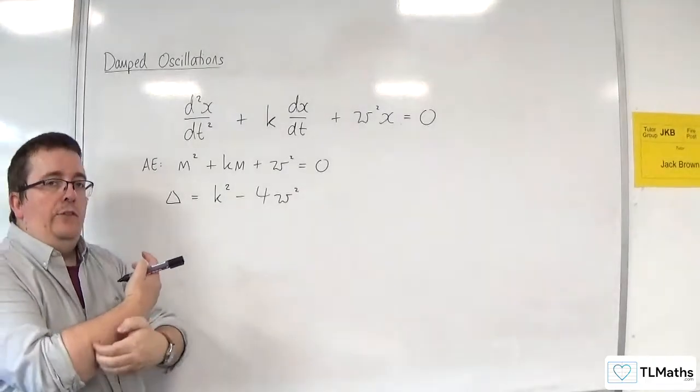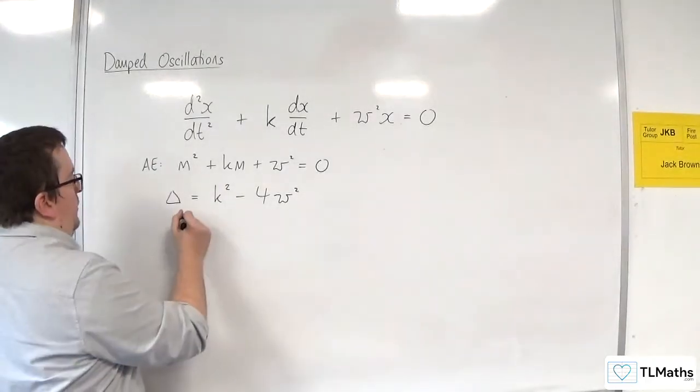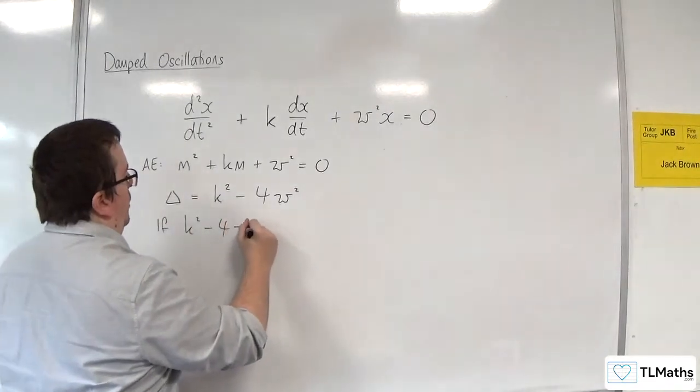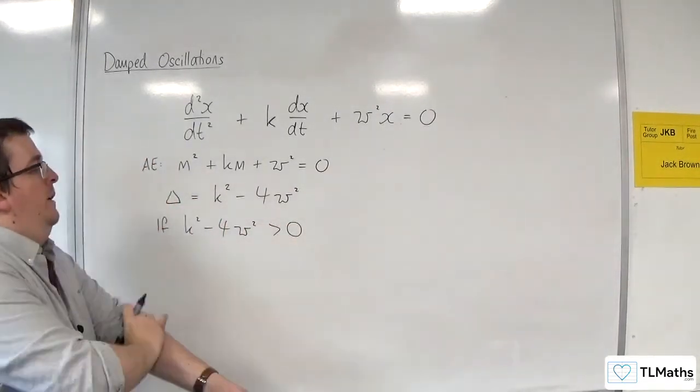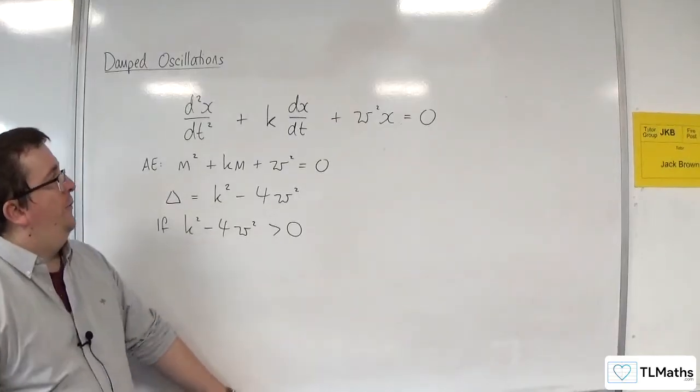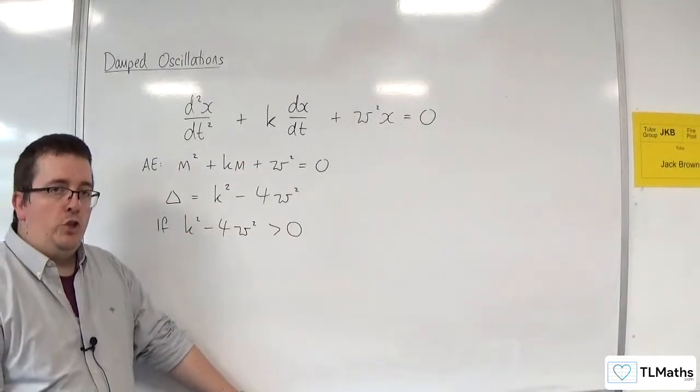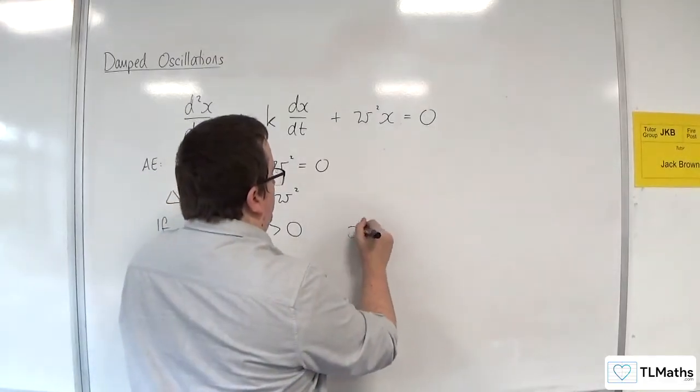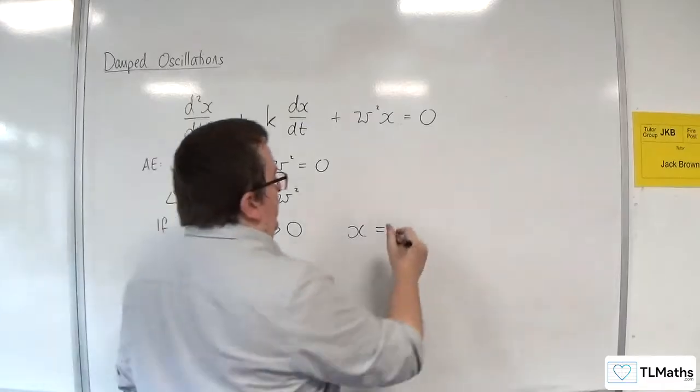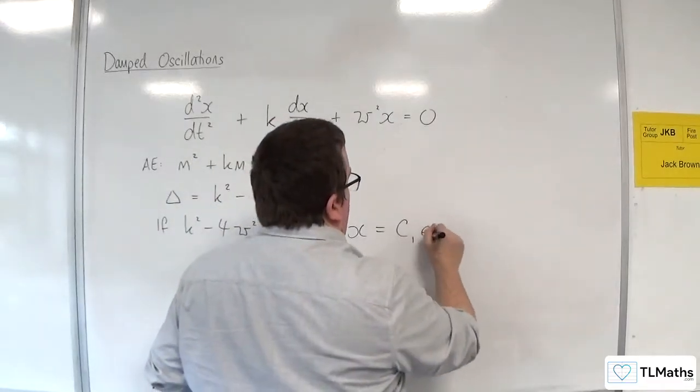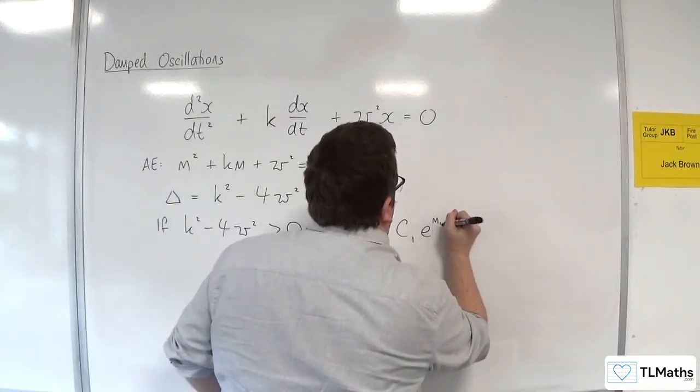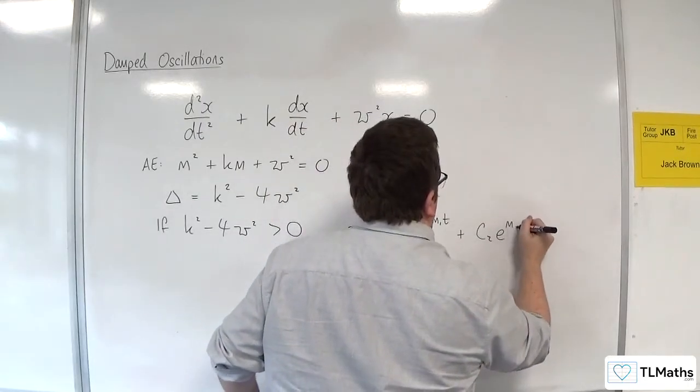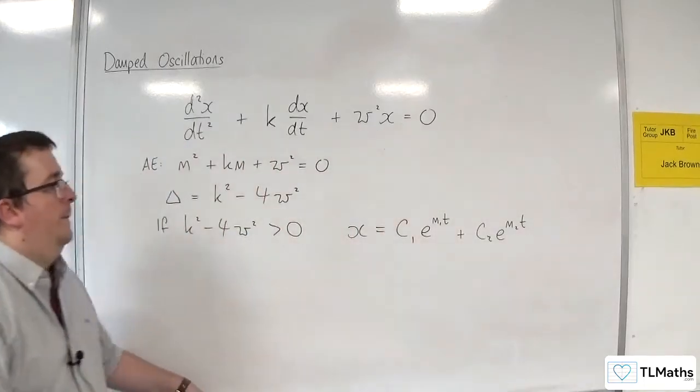Now, if that is greater than 0, so if k² take away 4ω² is greater than 0, then the solutions to your second order differential equation would be of the form x is equal to C₁e^(m₁t) plus C₂e^(m₂t).